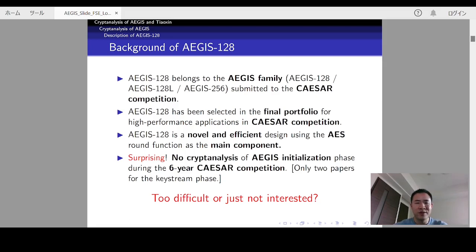The first of which targets for the 128-bit security, while the last one targets for the 256-bit security. Among them, AEGIS-128 has been selected in the final portfolio for high-performance applications in the competition for its novel and efficient designs.